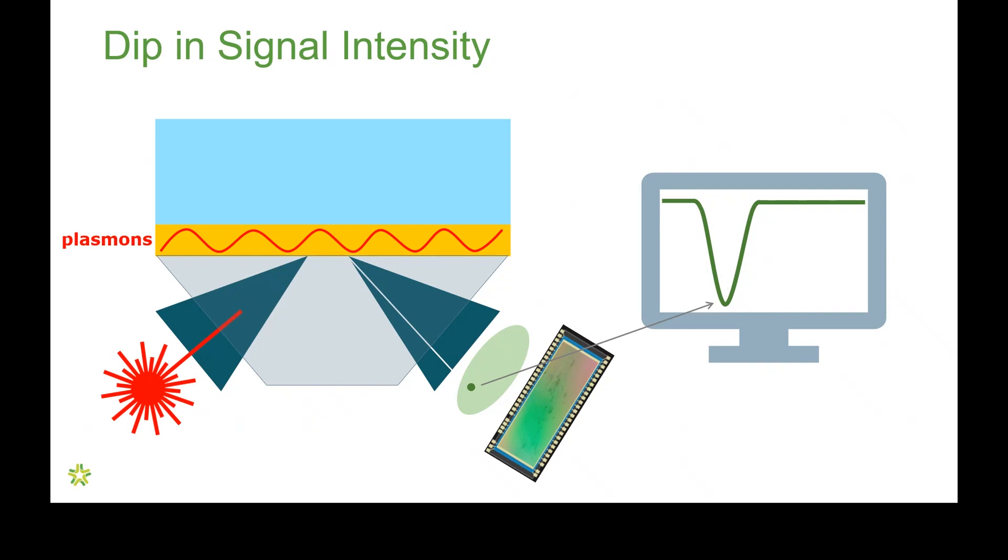And what we can do is we can track that minimum of that dip across different angles. Now, this dip is actually produced by measuring the refractive index of the buffer on the other side of that gold layer.